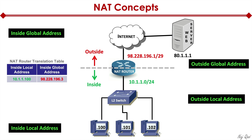The final term is outside local address. In 99% of situations you'll never come across this, so you really shouldn't worry about it. As the name suggests, it's a local address — not routable on the internet — but outside our control and administration. Think of it as when you acquire another company and want to connect your network with theirs, and they have their own local IP you want to route to. In the real world, you'll encounter it less than 1% of the time. The terms you really want to understand are inside local, inside global, and outside global addresses.